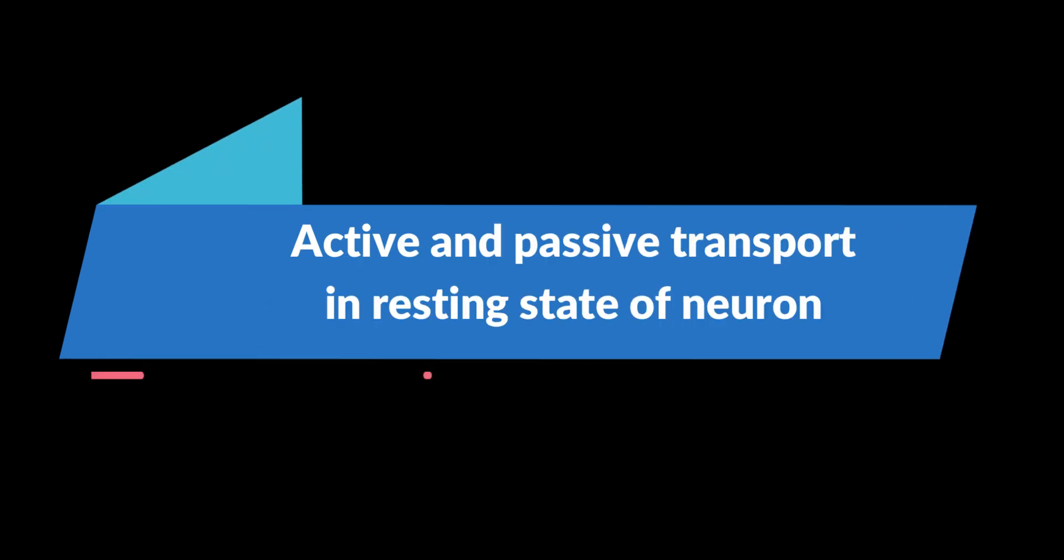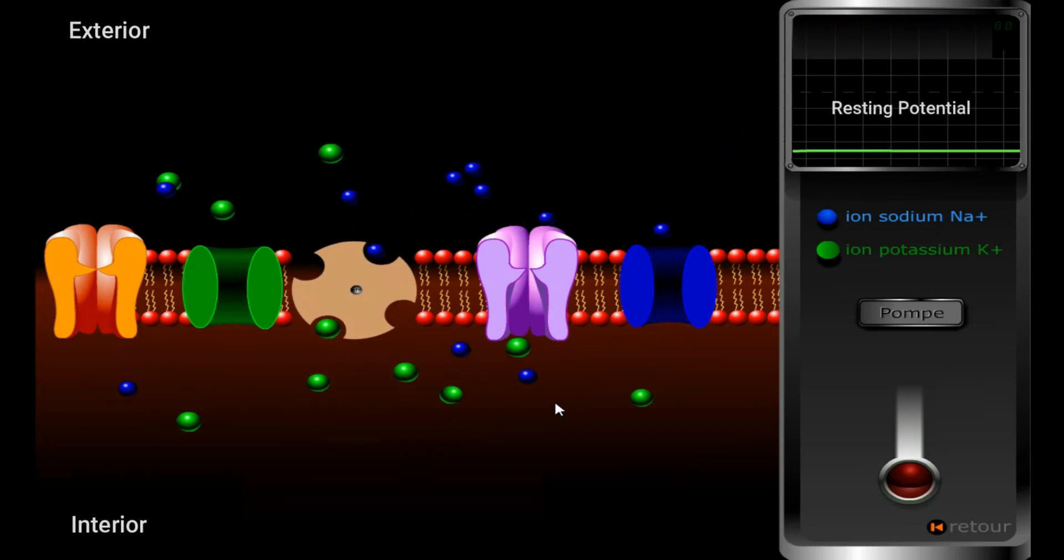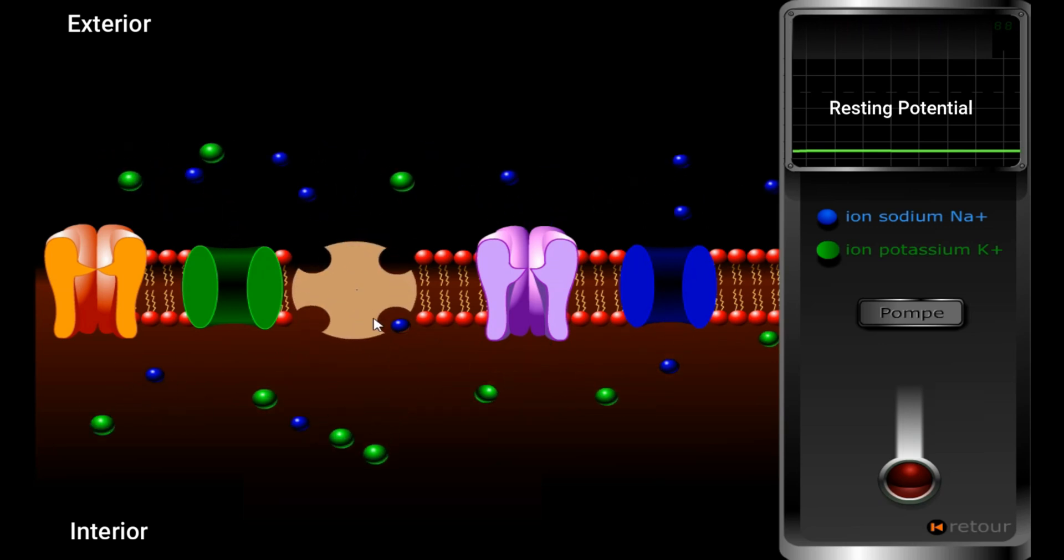Assalamu alaikum and hello everybody. In this video, I'm going to talk about the two types of ion transport through the plasma membrane of a neuron in resting state. The first type is passive transport.